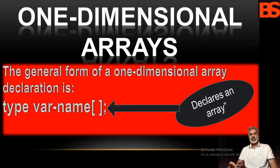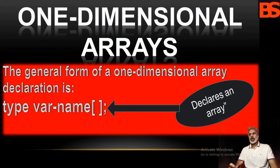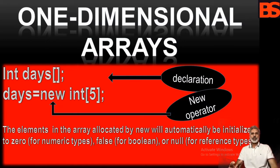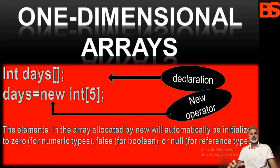A one-dimensional array is essentially a list of like-type variables. To create an array you first must create an array variable of the desired type. The syntax is: type variable-name[]. Here, 'type' declares the element type, also called the base type of the array. The element type determines the data type of each element that comprises the array. Although this declaration establishes that 'days' is an array variable, no array actually exists yet.